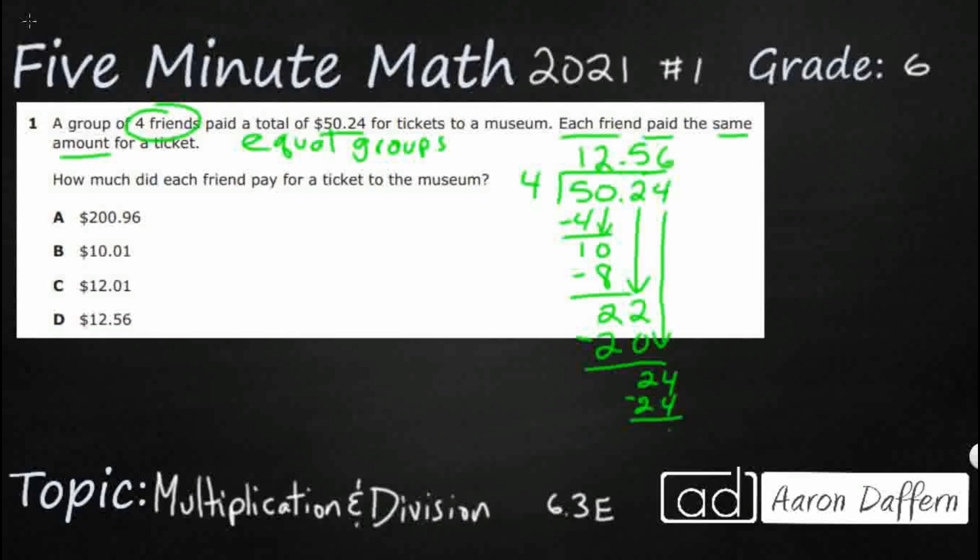So it looks like our answer is going to be D. Let's just double check and make sure our division is correct by multiplying. You can always multiply to double check your answer because division and multiplication are inverse operations.